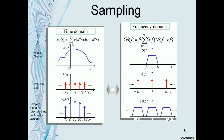This diagram gives a clear idea about the time domain and frequency domain representation of the sampling process. We have the continuous signal G(t) with spectrum G(f). In order to sample the signal, we consider the impulse train δ(t) with spectrum δ(f). The sampled signal is G_δ(t) and the spectrum of the sampled signal is G_δ(f).